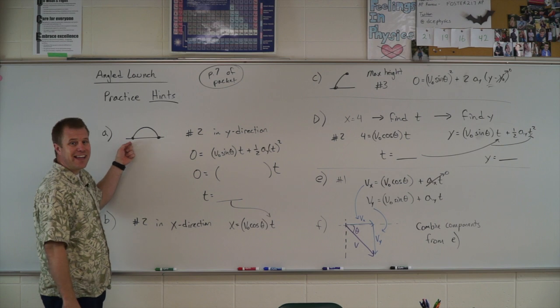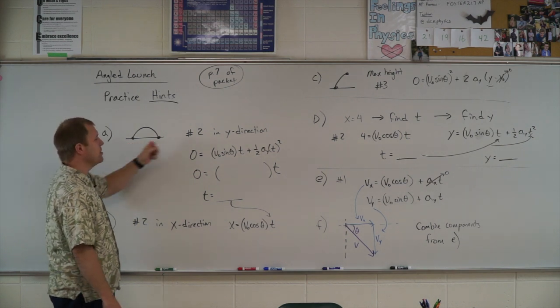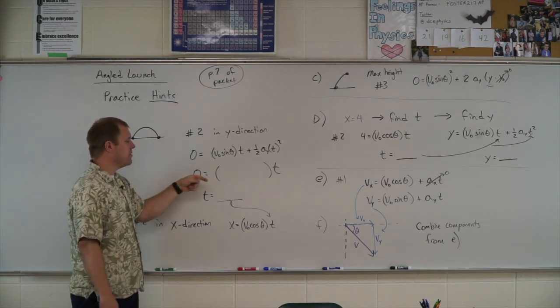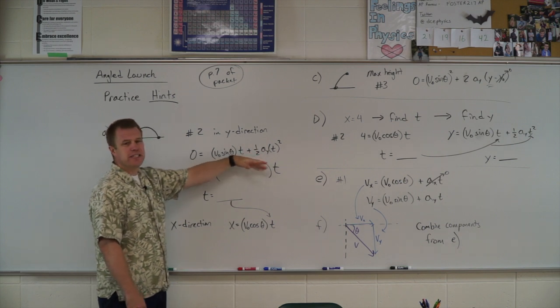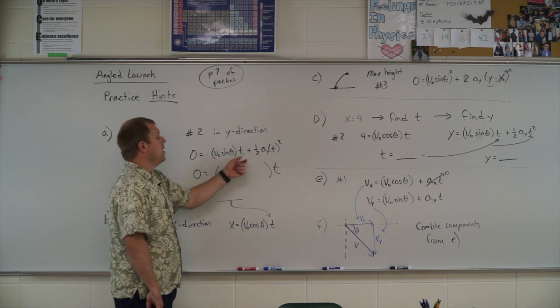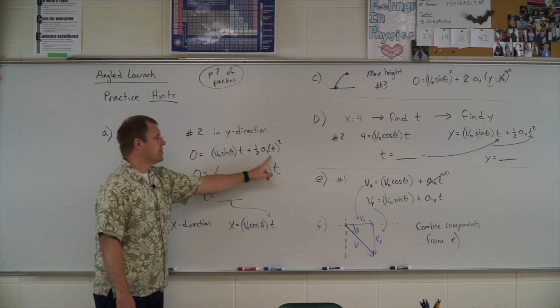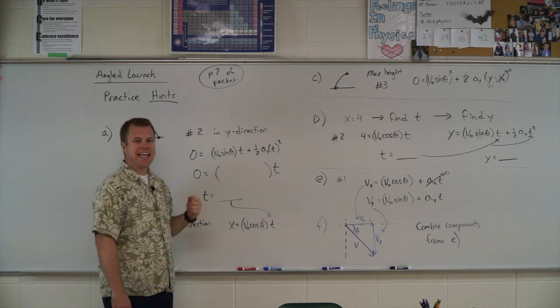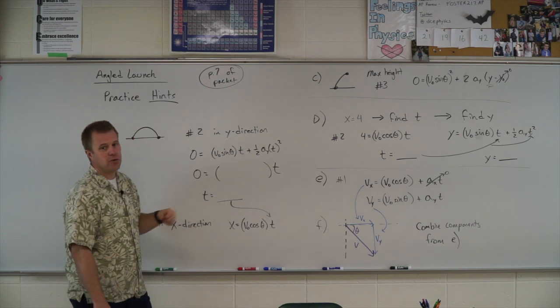So the first one, we're trying to find that time in the air, so we're using equation number two in the y direction and we're solving for t. Now notice there's a t and a t squared, so you could poly symbol at this point, or what you can do is just factor out a t and then solve for when that inside is equal to zero to find your time.